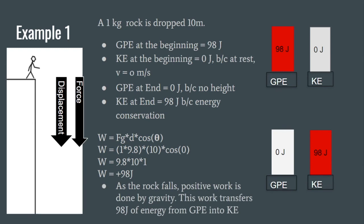The work done by force gravity is positive 98 joules. As the rock falls, positive work is done by gravity, transferring 98 joules from GPE into KE. If you're ever unsure whether work is positive or negative: if you end with more kinetic energy than you started, some force did positive work. If you end with less kinetic energy, some force gave energy to the surroundings.